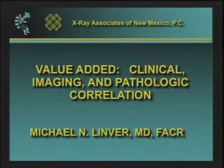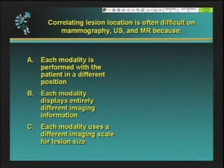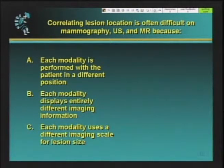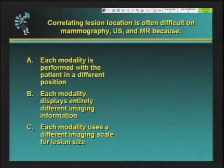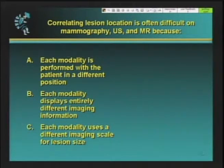Now we have a couple of questions before we get into the first talk, and these have to do with this subject. If you have your clickers, I'd like you to respond. When correlating lesion location, it's often difficult on mammography, ultrasound, and MR because: A, each modality is performed with the patient in a different position; B, each modality displays entirely different imaging information; or C, each modality uses a different imaging scale for lesion size. What is the one of these that makes the correlation the most difficult?